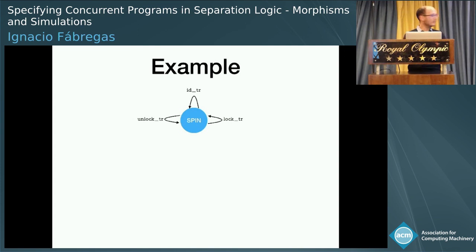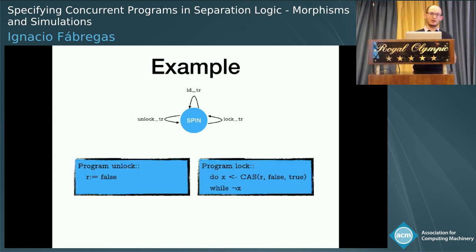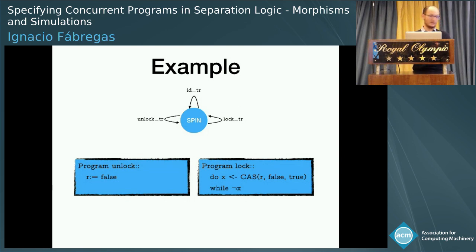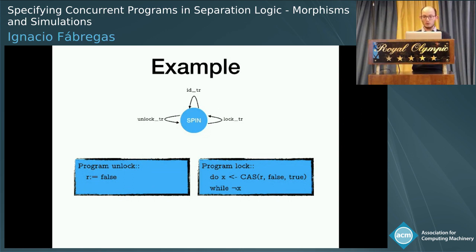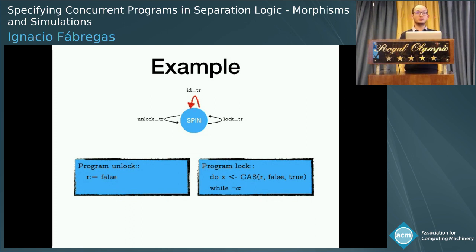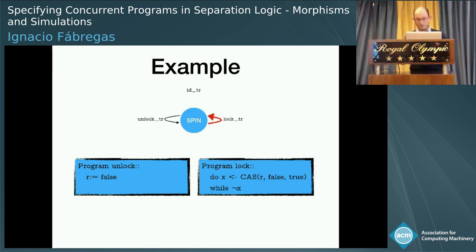This is a spin lock, and I will show you two programs: one for locking and one for unlocking. The locking program is going to try to put the lock into true. R is a reference to the lock itself — when it is true it's locked, and when it is false it's unlocked. It's going to try to do a compare-and-swap. Eventually it will try to write the lock to true, so we will have some identity transitions in the resource, and eventually we will be able to change R to true and then perform the lock transition.